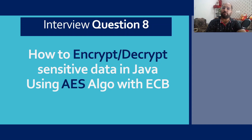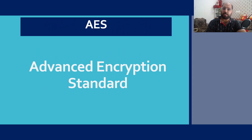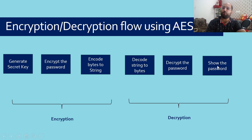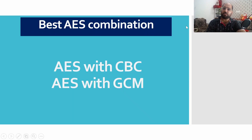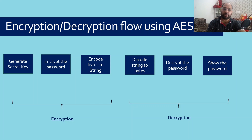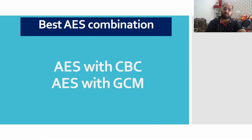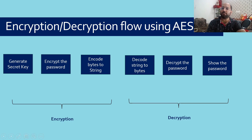The use case is: when we deal with API or UI automation, we need to store sensitive information and we cannot store it in plain text because that would compromise security. So we need to encrypt it, and during automation we need to decrypt it. AES stands for Advanced Encryption Standard. Along with AES, I'm going to use ECB, though it is less secure compared to other counterparts like CBC and GCM. CBC is more secure than ECB, and GCM is the most secure. For this lecture I'll use ECB, but I can create a video on CBC and GCM as well.